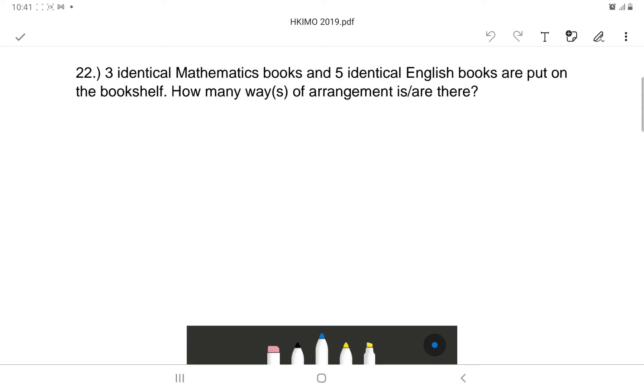which is eight - three for math and five for English. So you have a total of eight. You can have eight factorial all over. From eight factorial, from eight objects, you have three identical math books, so...